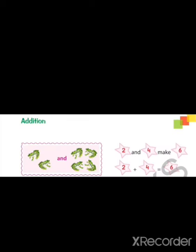Let us take another example. In this picture you can see 2 frogs and 4 frogs. 2 and 4 make 6. So we will write it as 2 plus 4 is equal to 6.